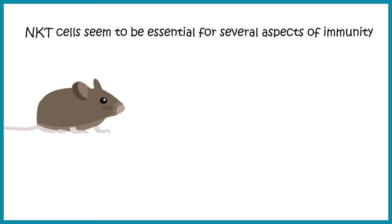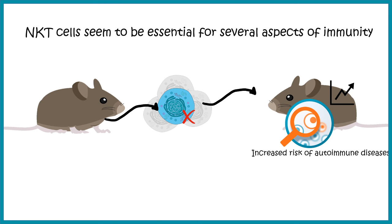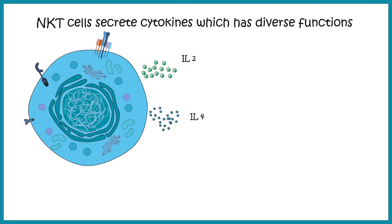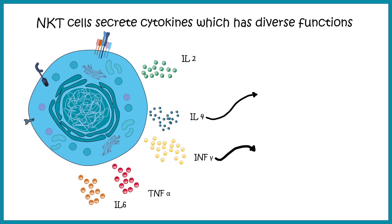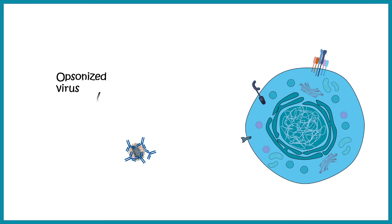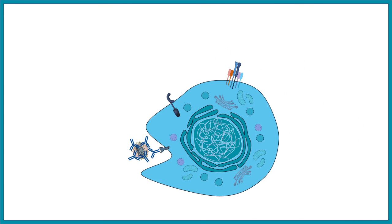NKT cells appear essential for several aspects of immunity. In mice where NKT cells are absent or abrogated, the risk of autoimmune disease increases, indicating their role in autoimmunity. NKT cells secrete diverse cytokines including IL-2, IL-4, interferon gamma, and TNF-alpha. IL-4 and interferon gamma help drive T cell differentiation into TH1 or TH2 subtypes, with deep consequences for immune responses. TNF-alpha and IL-6 can also invoke inflammatory responses, which is a characteristic feature of NKT cells.